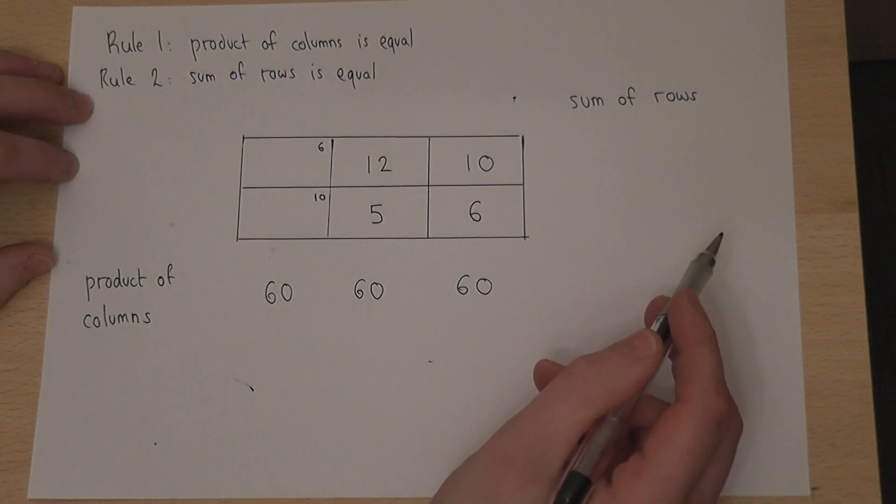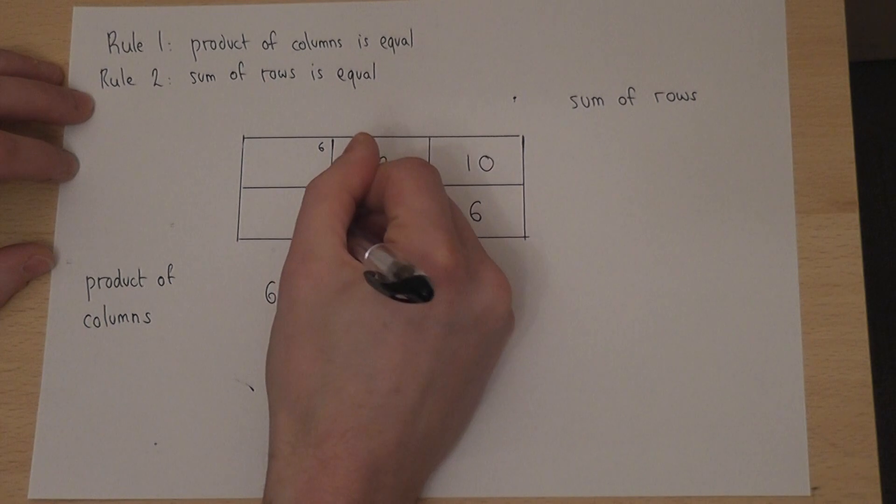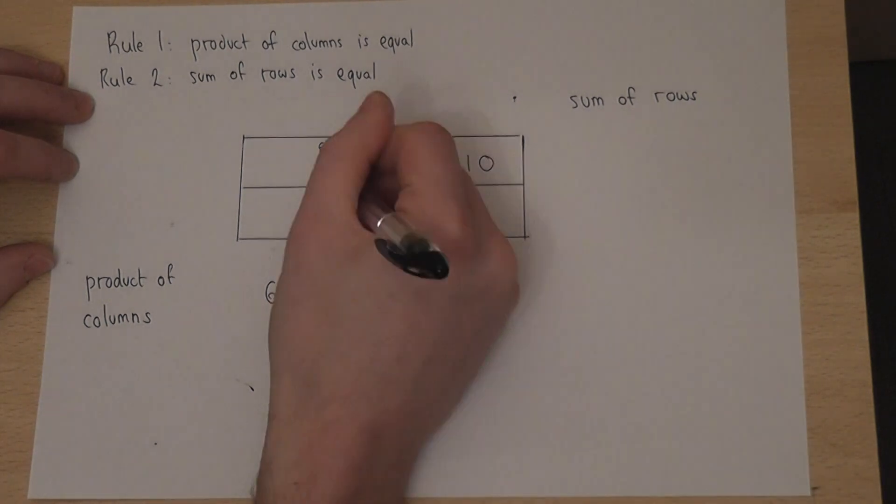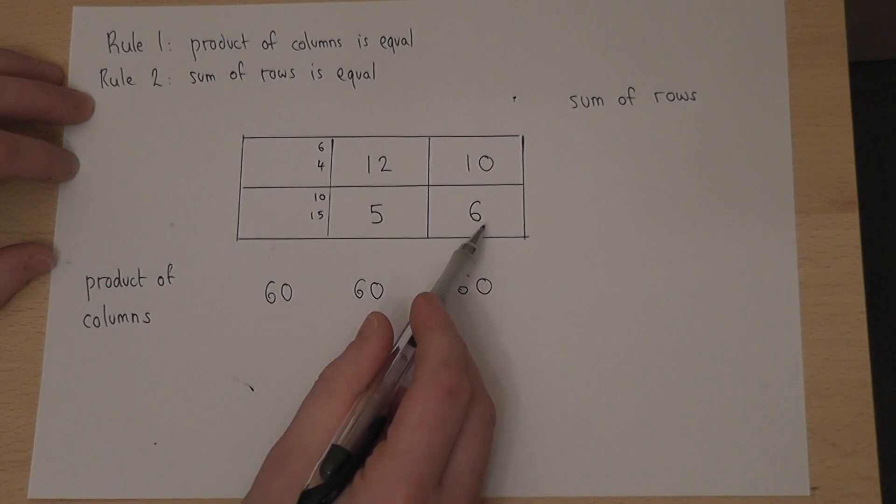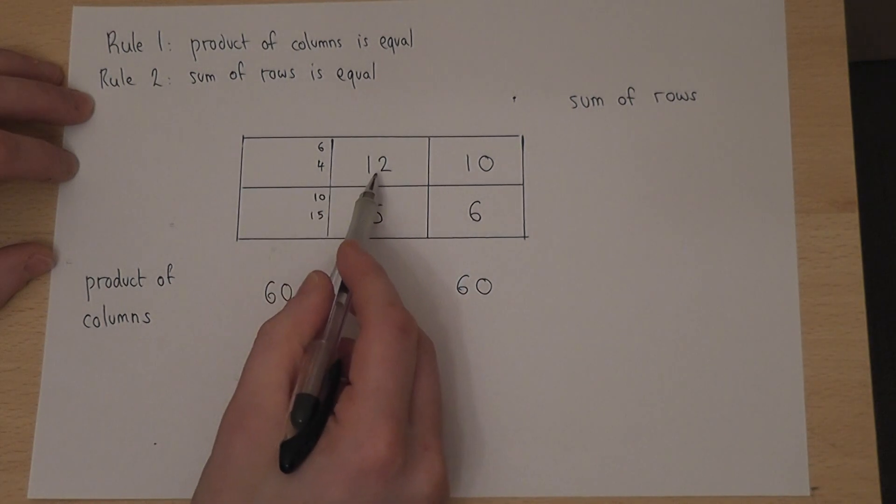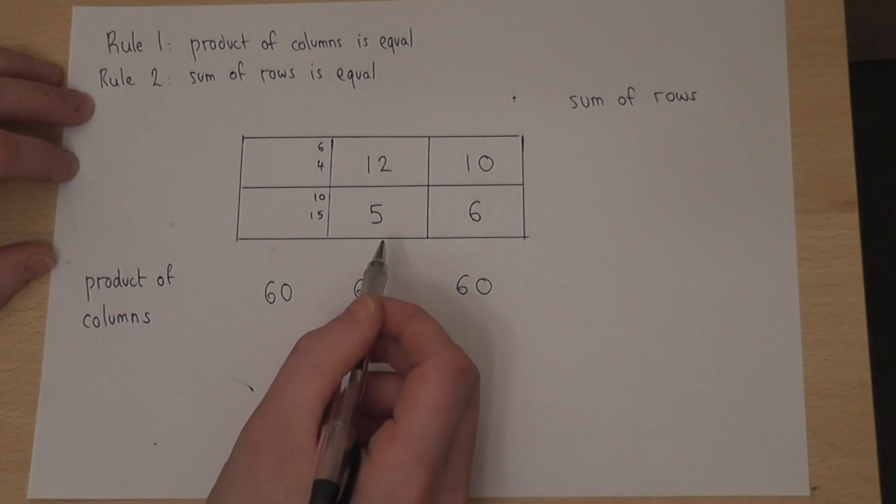So I could try 15 and 4. 15 plus 5 is 20, plus 6 is 26. 4 plus 12 is 16, plus 10 is also 26.